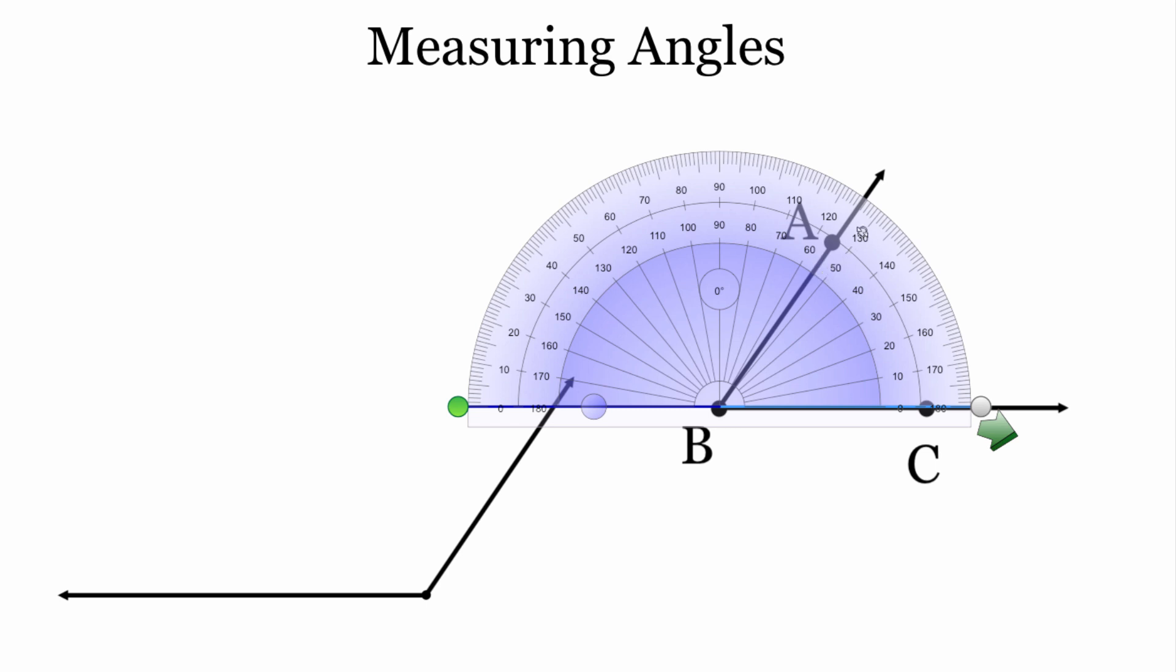So now what we do is we have to go to these outer markings. This big mark right here is our 50 degree mark. And then we have to count how many over we are. So it's one, two, three, four lines over. So it would be 54 degrees.